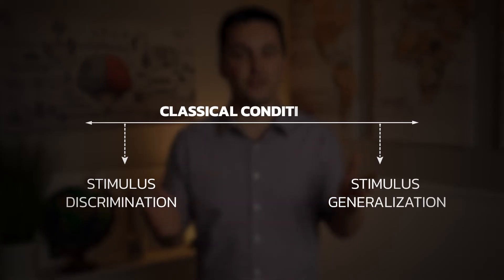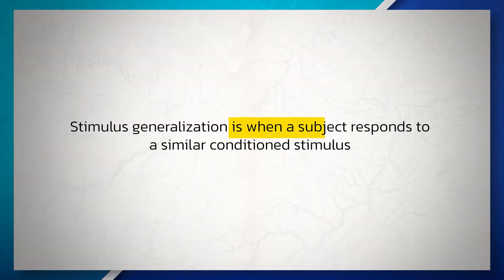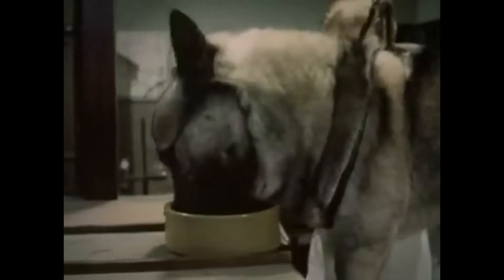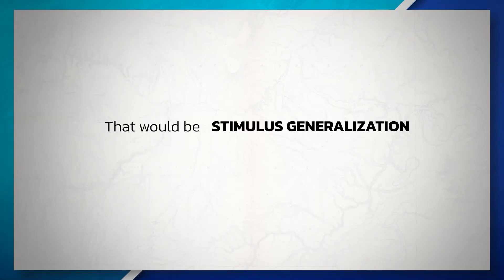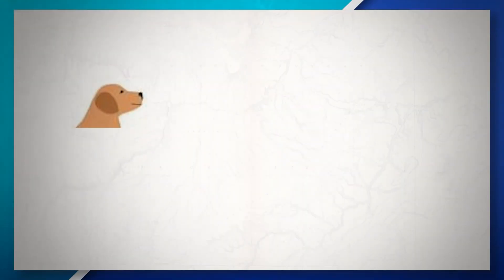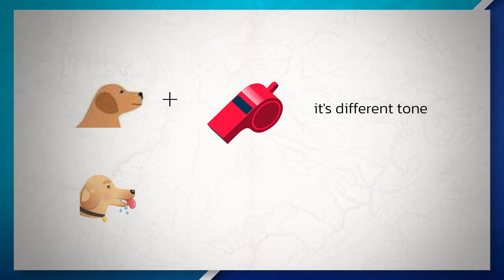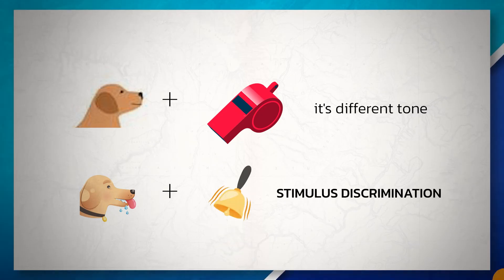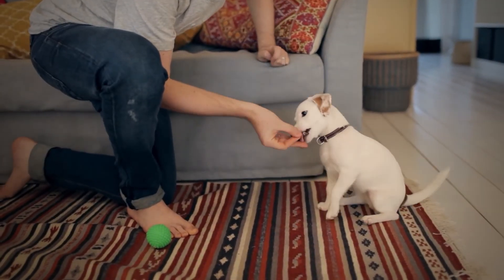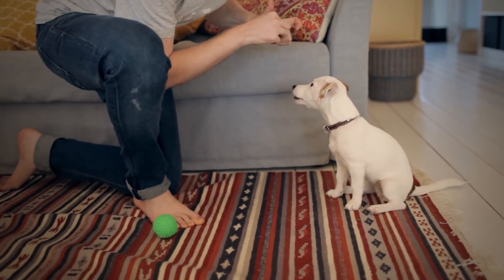We can also see stimulus generalization and discrimination occur during classical conditioning. Stimulus generalization is when a subject responds to a similar conditioned stimulus. For instance, if Pavlov presented the dog with different tones similar to the original bell and those tones elicited the dog to salivate, that would be stimulus generalization. On the other hand, if Pavlov played a different tone and found that the dog recognized the two stimuli were different and only salivated for certain tones, that would be stimulus discrimination. Pavlov could accomplish this by playing a tone similar to the bell but never giving the dog food after that tone — eventually the dog would learn not to salivate to it.